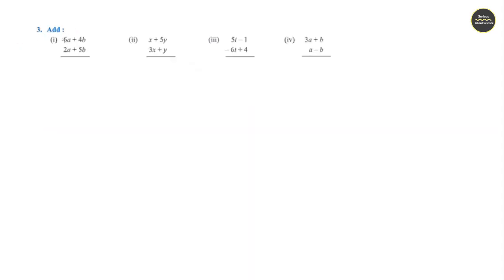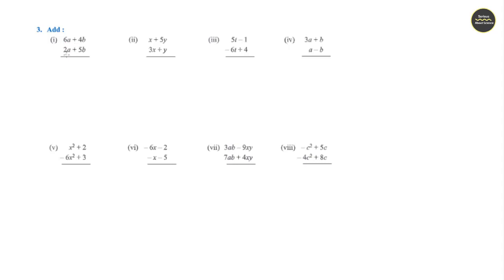Section 3, Question 1: It has two terms. First term is 6a plus 4b, second term is 2a plus 5b. Adding like terms: 6a plus 2a gives 8a, and 4b plus 5b gives 9b. Question 2: x plus 3x gives 4x, plus 5a, plus y gives 6y. Answer is 4x plus 6y.